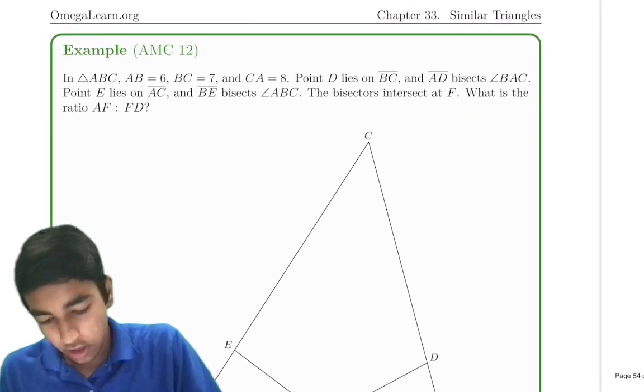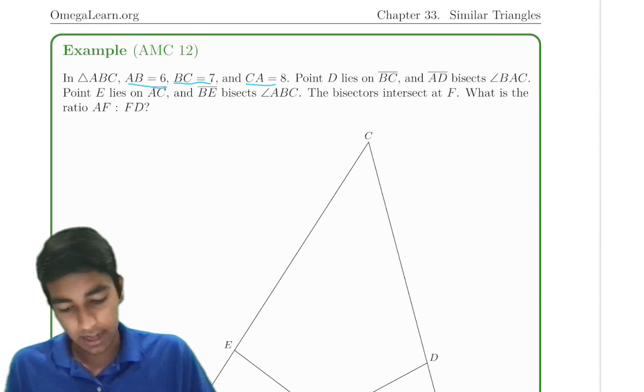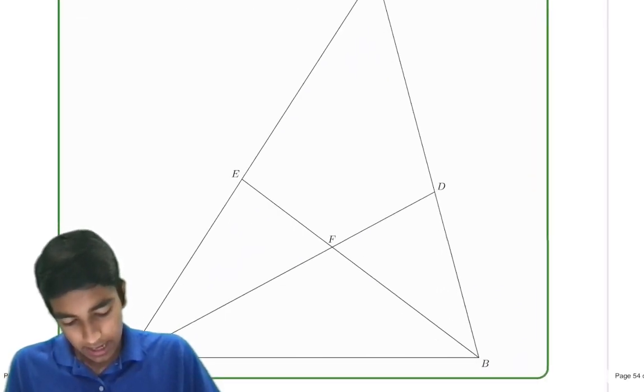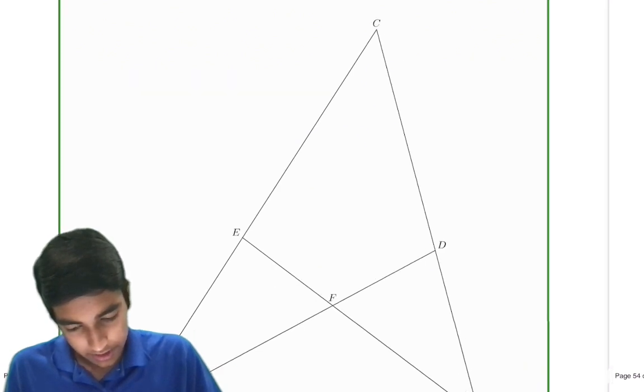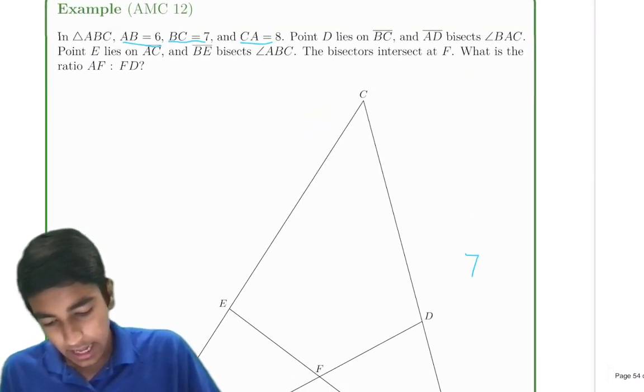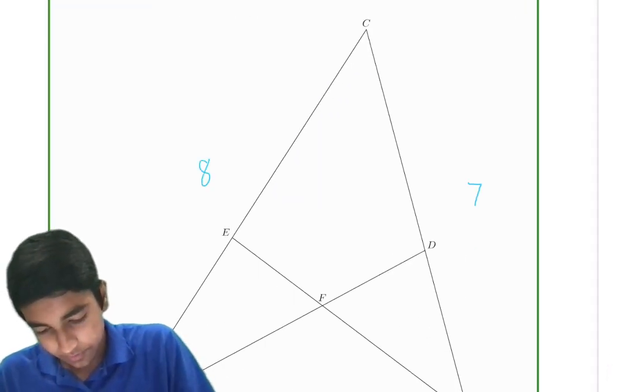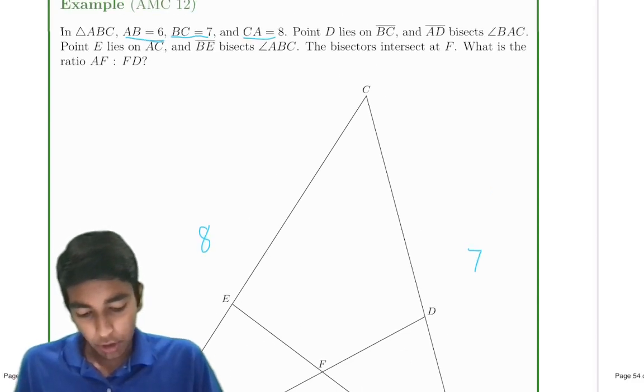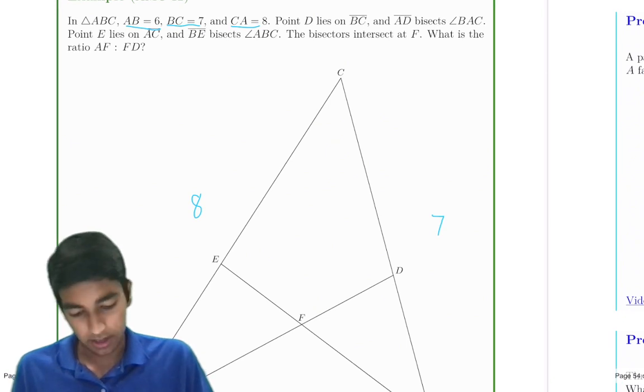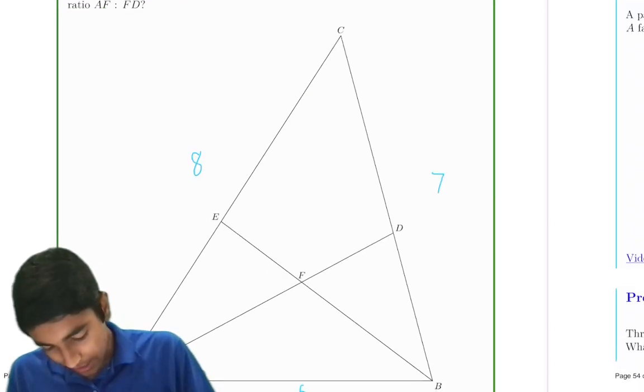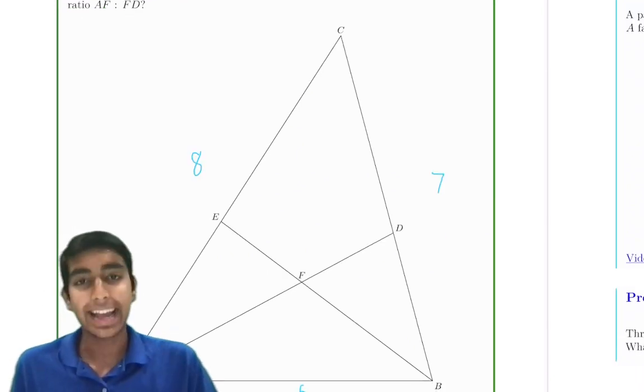In this triangle, we have AB is 6, BC is 7, and CA is 8. Point D lies on BC such that AD bisects BAC. So this is an angle bisector right here, AD.